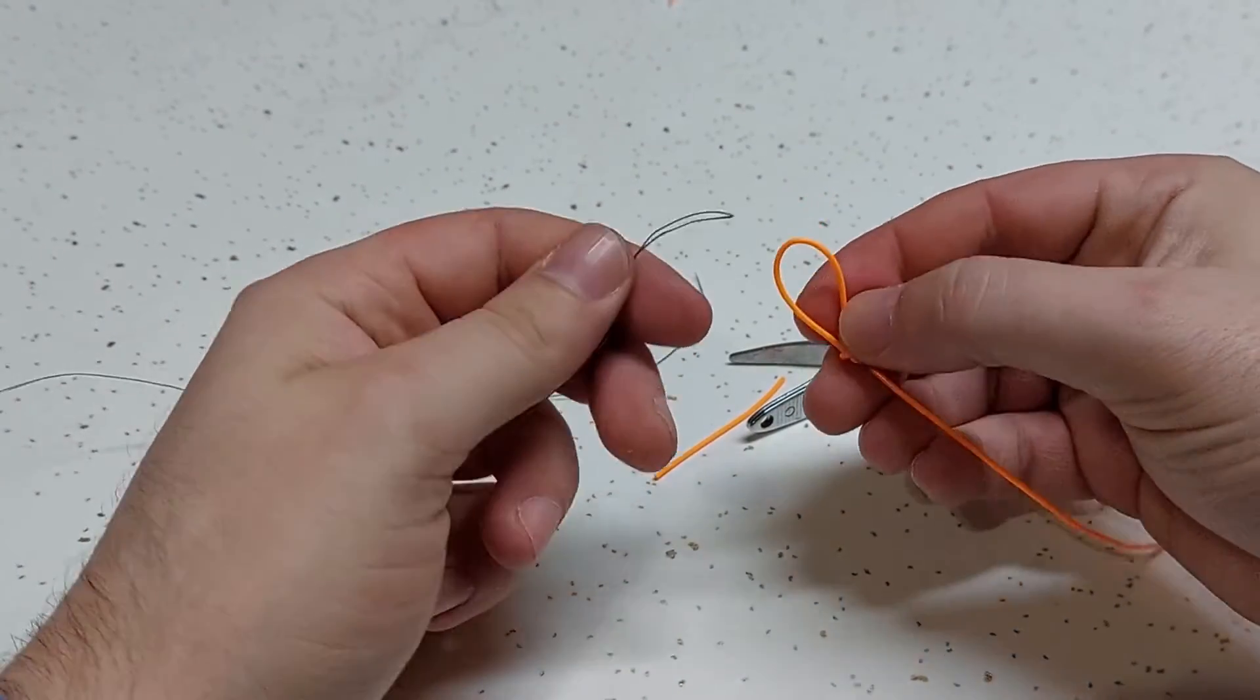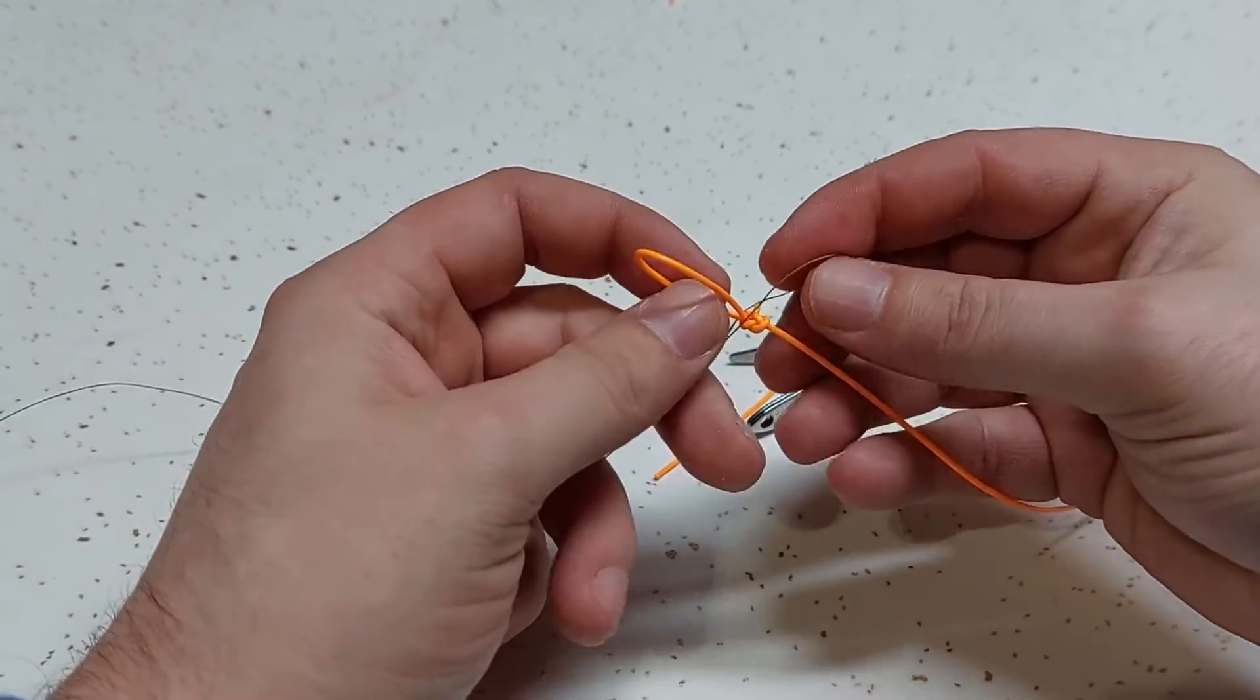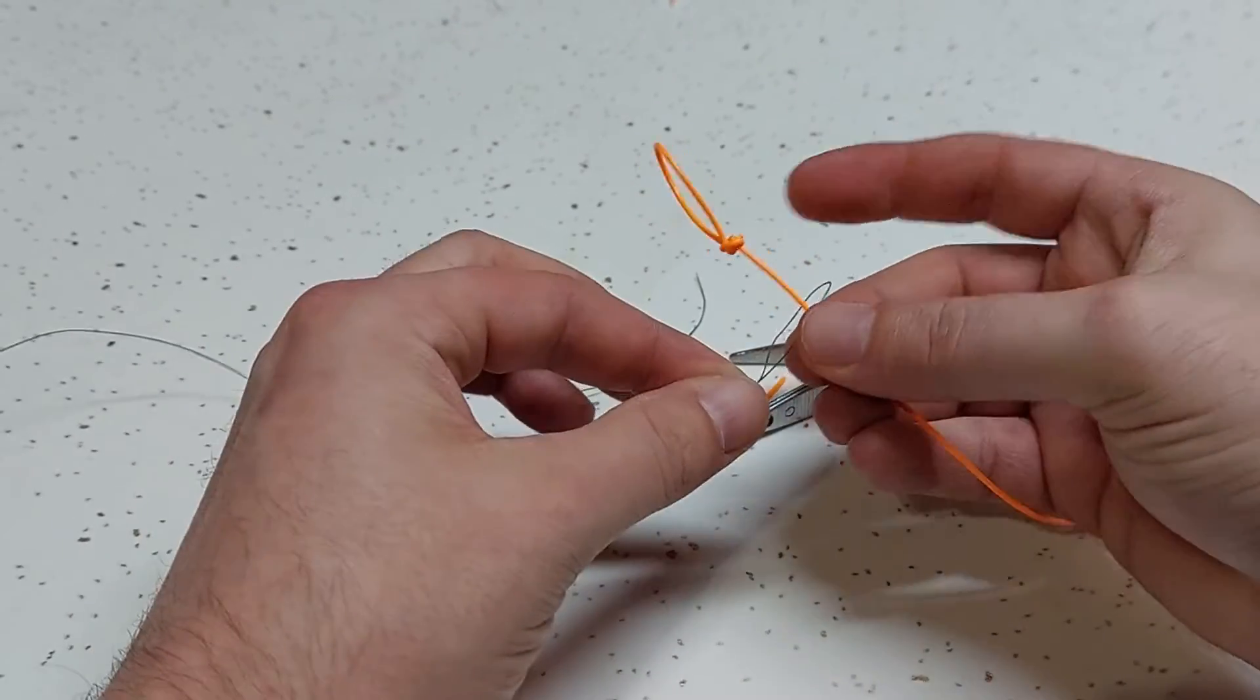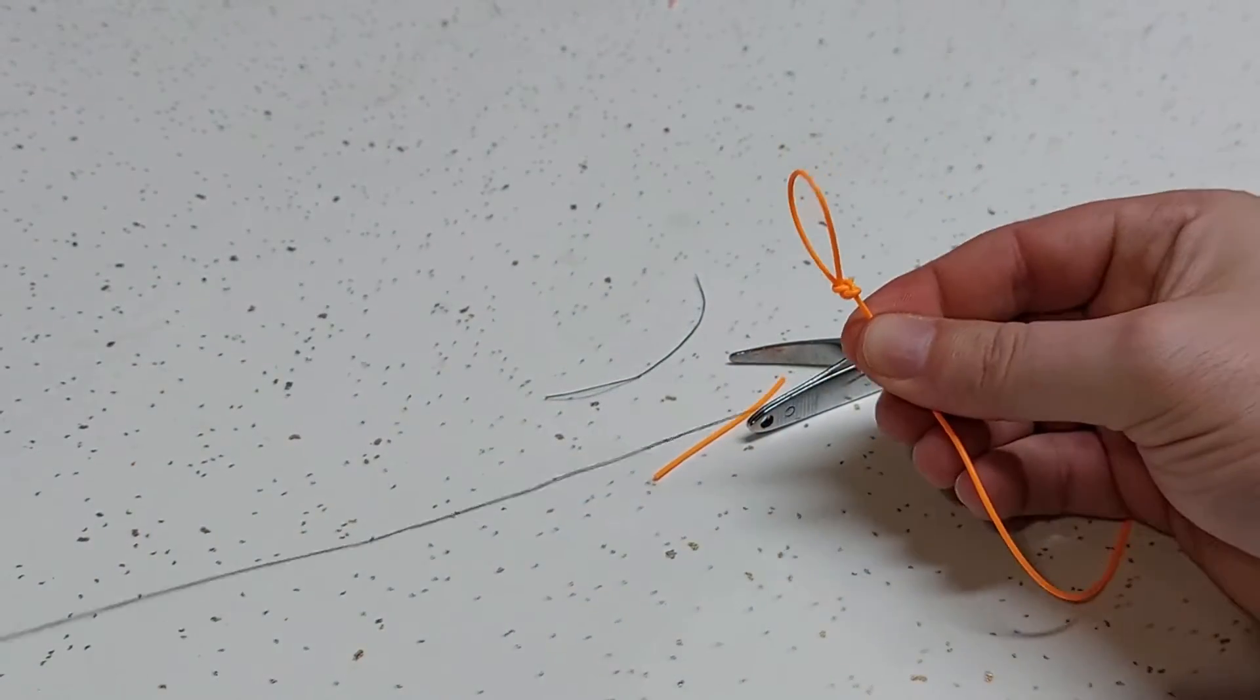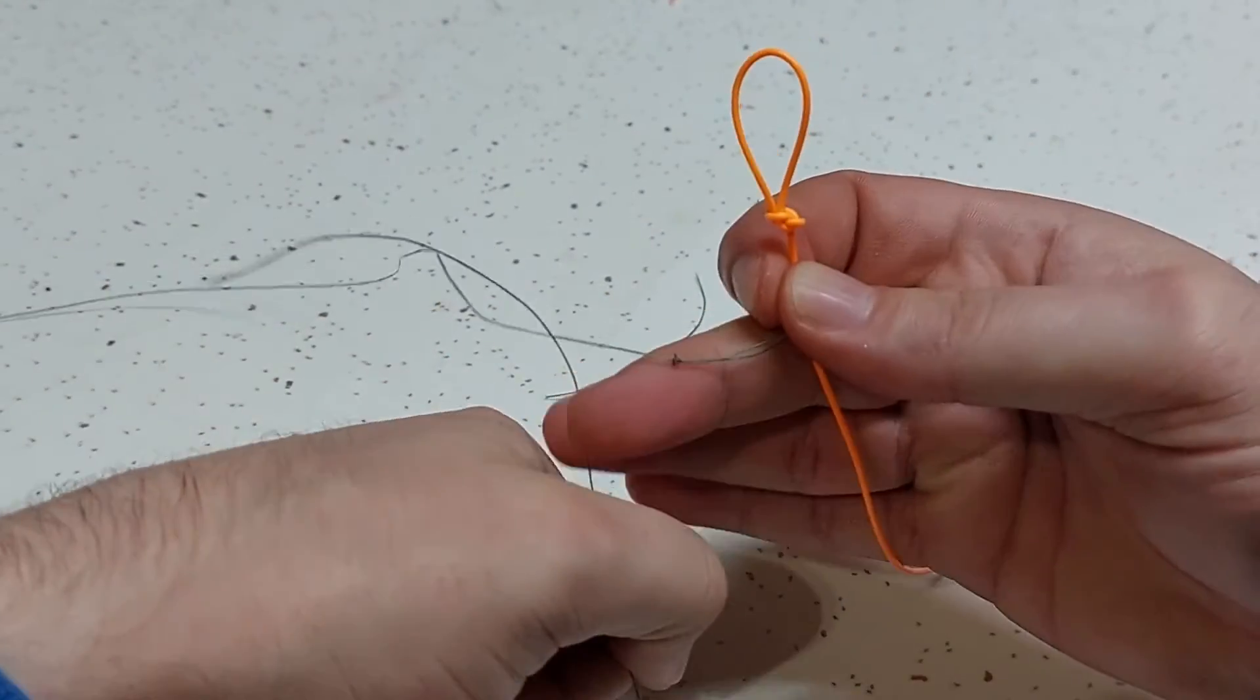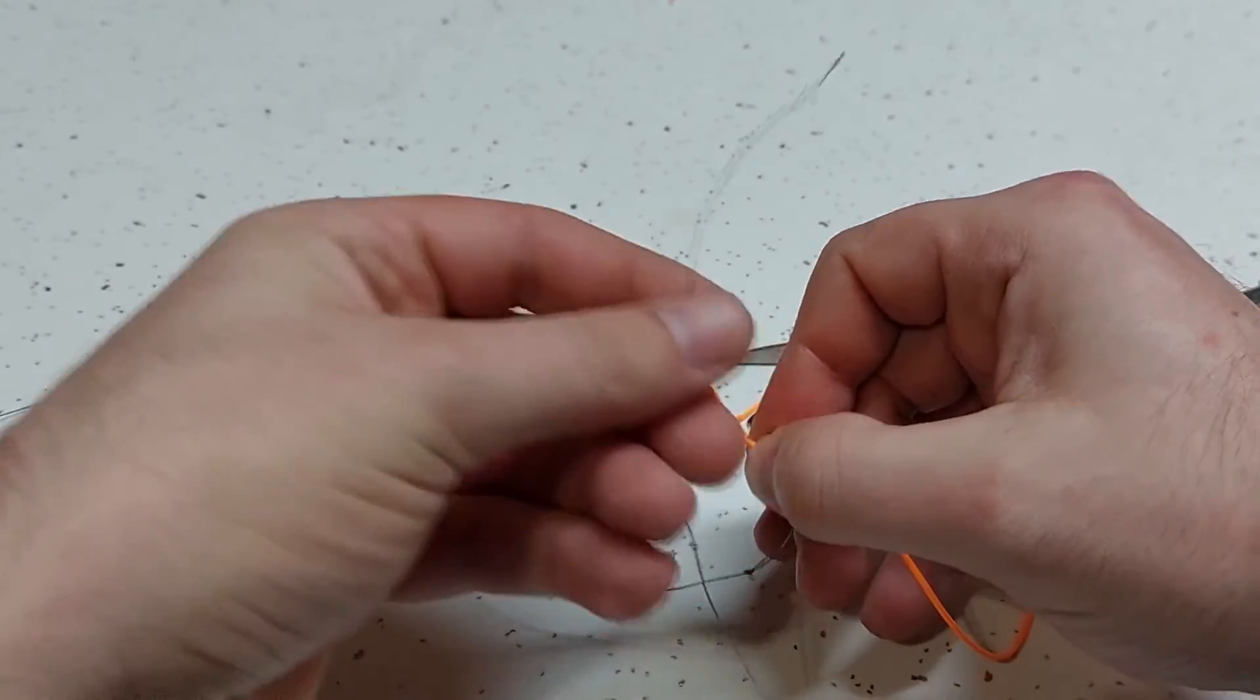So what you do is you run this fly leader or fly line through what's going to be your leader or your tippet, so you got it on there like that. And then come back here, take the end of your leader and then run it back through that hole right there.